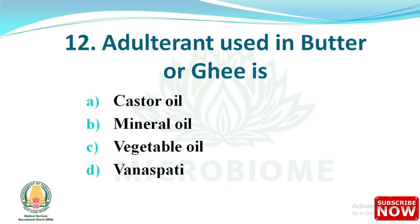Next question: the adulterant used in butter or ghee is — options: (A) castor oil, (B) mineral oil, (C) vegetable oil, (D) argemone oil. The right answer is option D, argemone oil.